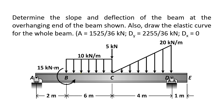Good day! We will be solving this problem using the double integration method. We have to determine the slope and deflection of the beam at the overhanging end — point E — and also draw the elastic curve for the whole beam. I already solved for the reactions: the roller support at A gives 1,525 over 36 kN upwards, and the pin support at B gives 2,255 over 36 kN upwards for the Y component. The X component is 0 since there is no horizontal load.